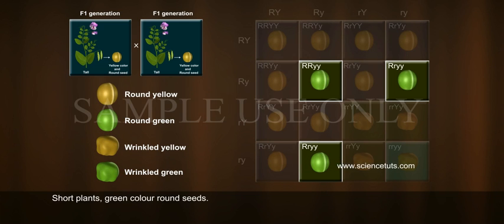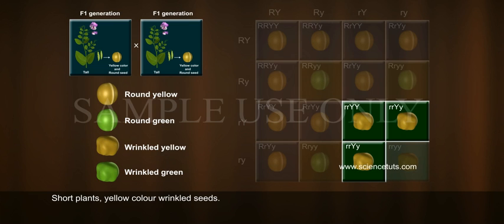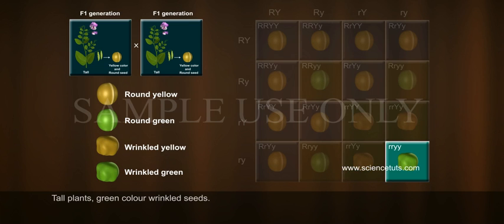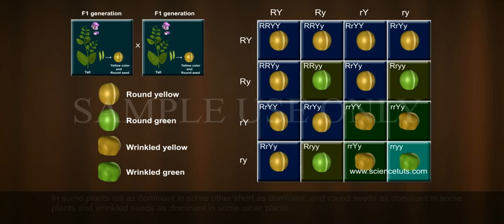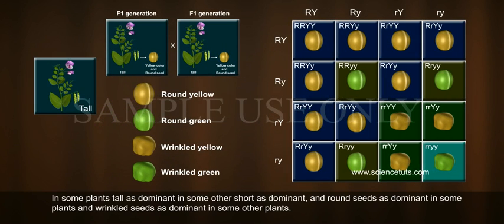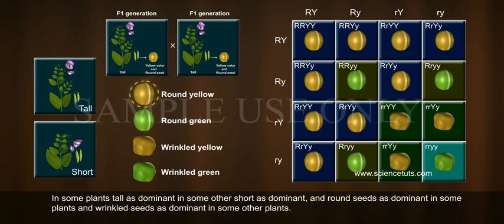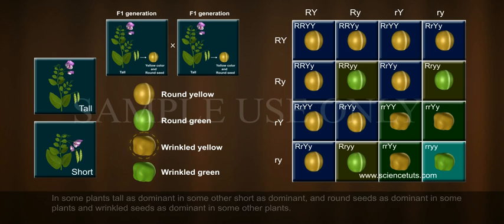The F2 generation also includes short plants with green color and round seeds, short plants with yellow color and wrinkled seeds, and tall plants with green color and wrinkled seeds. In this generation, some traits are expressed as dominant traits in some plants — tall as dominant in some, short as dominant in others, round seeds as dominant in some plants, and wrinkled seeds as dominant in some other plants.